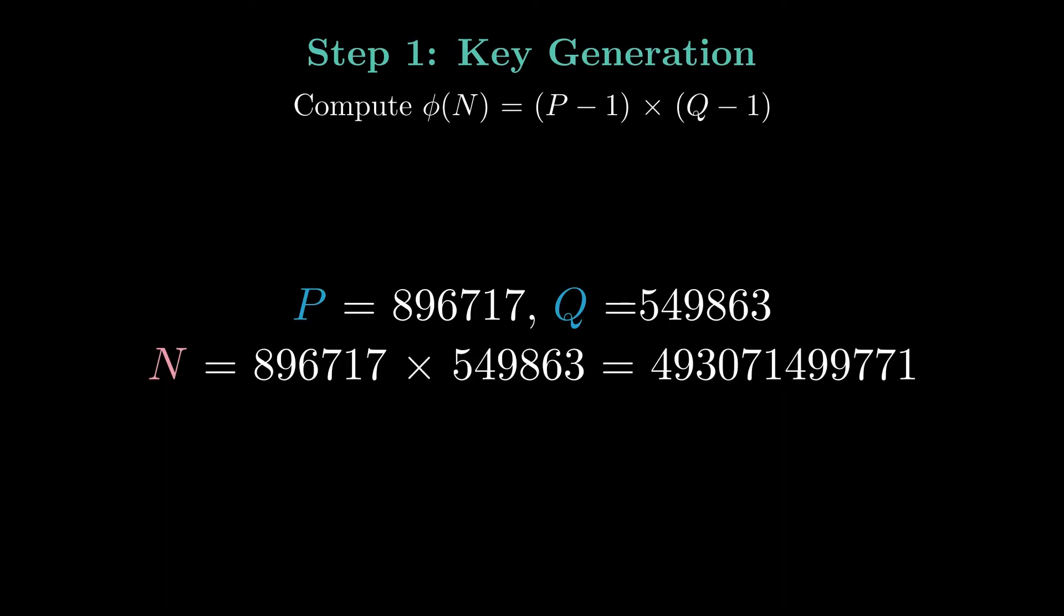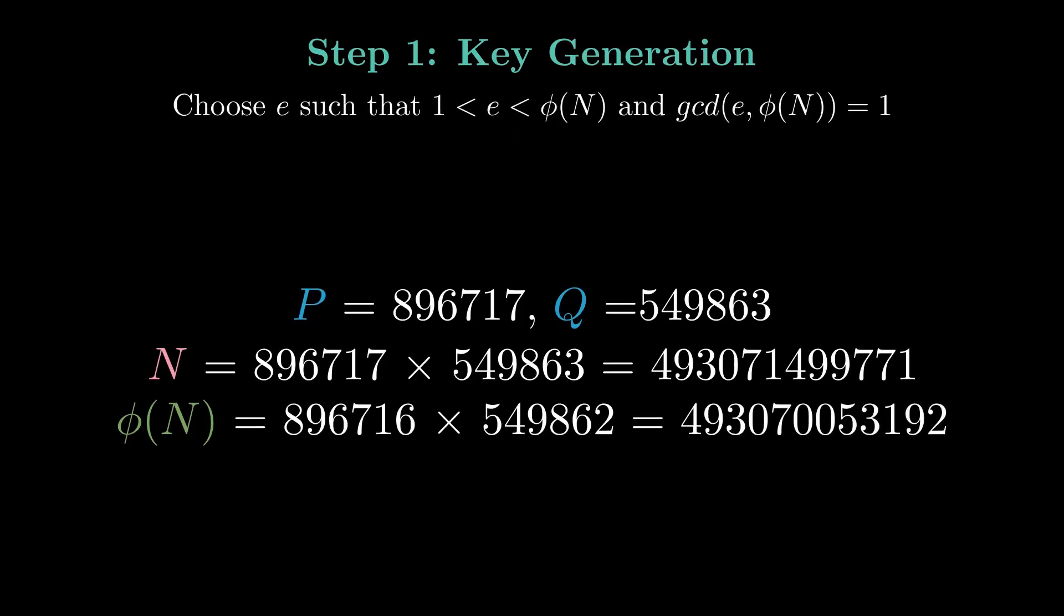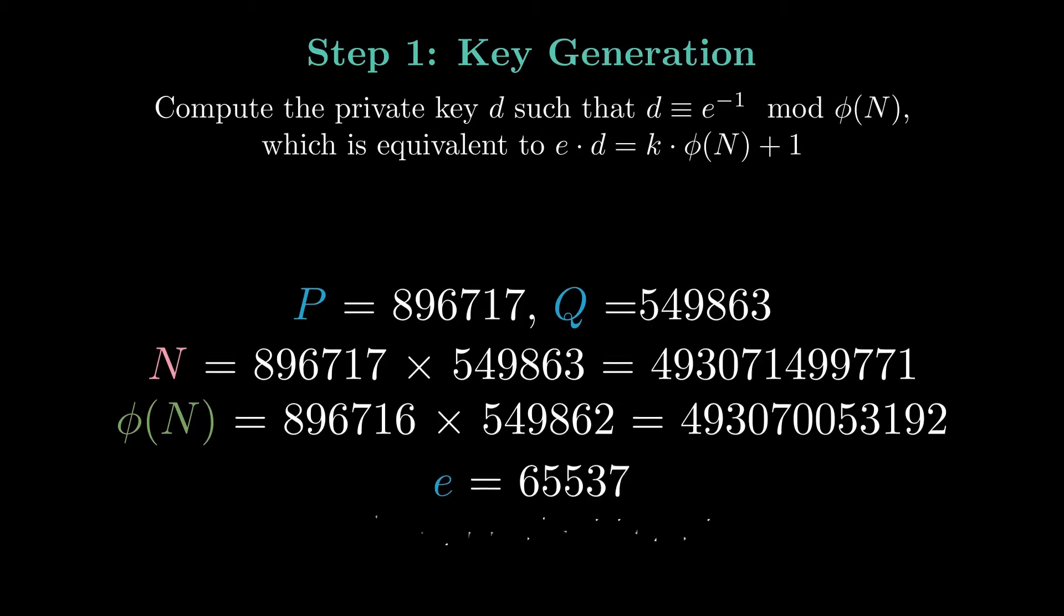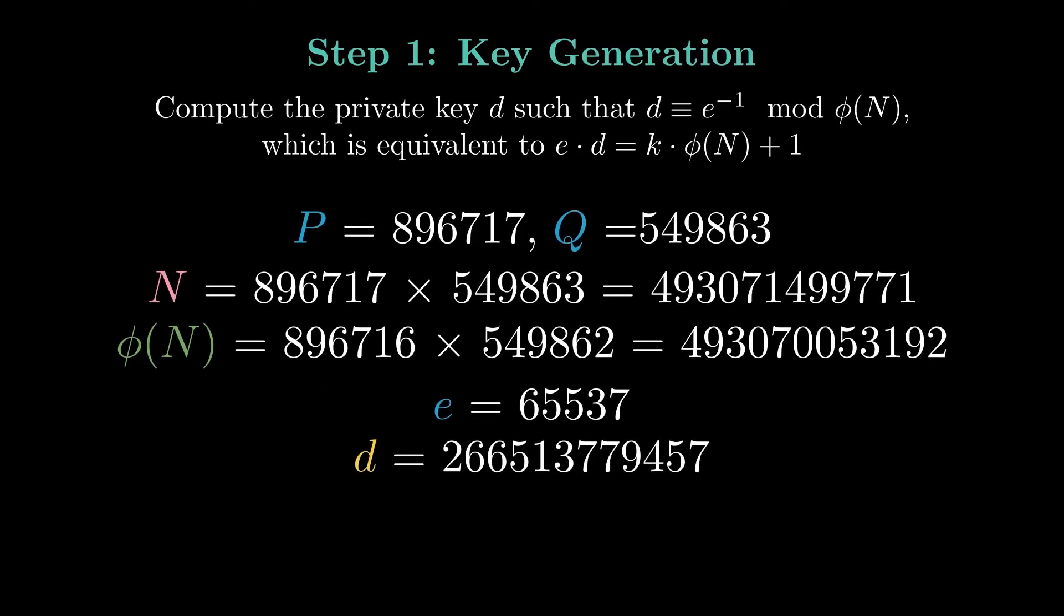Calculate φ(n), which is (p-1) times (q-1). Choose the public exponent e, coprime with φ(n). Compute the private exponent d, the modular multiplicative inverse of e modulo φ(n), which can be computed using the extended Euclidean algorithm. It verifies the equation e times d equals k times φ(n) plus 1.